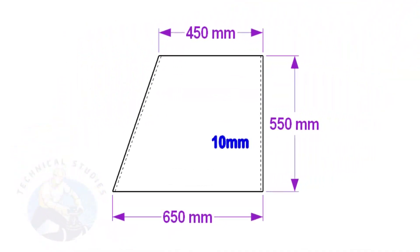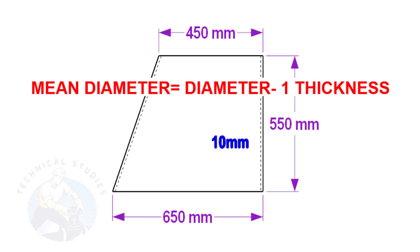To make a layout, we need to calculate the circumference of the top and bottom sides of the cone. To calculate the circumference, we need to know the mean diameter of the cone's bottom and top. Deduct 1 thickness from the diameter to get the mean diameter.